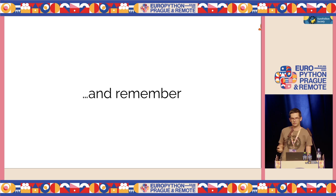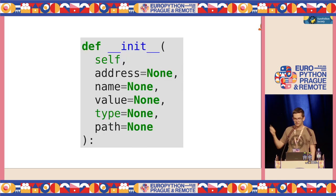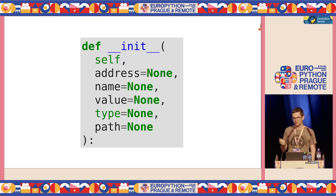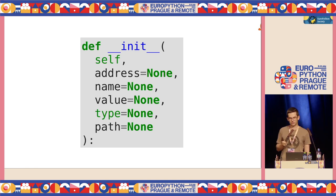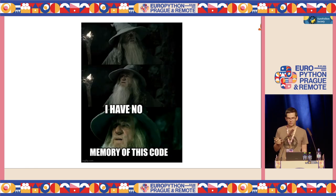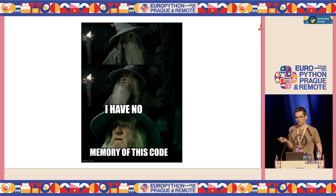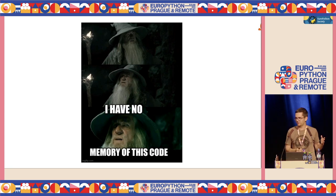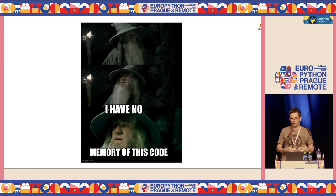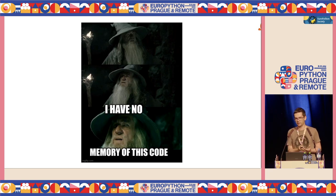Types also help me remember. This is code from my bachelor thesis that I wrote about eight years ago. When I checked it last week, I had absolutely no idea what was going on — because I didn't have any type hints. At the time, I think they didn't even exist. But if I wrote this code now with type hints, I would have at least a cursory understanding of what the code is doing, even after five years.